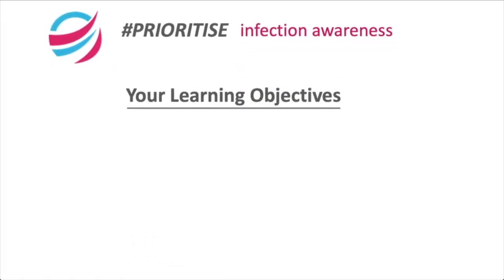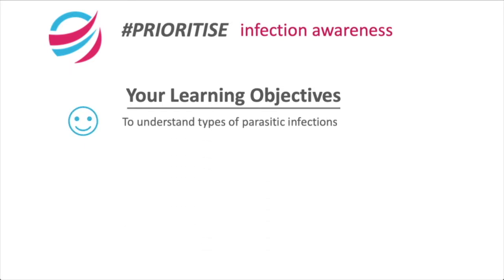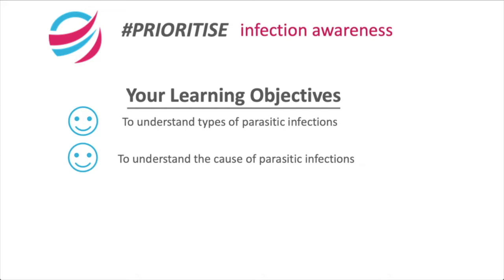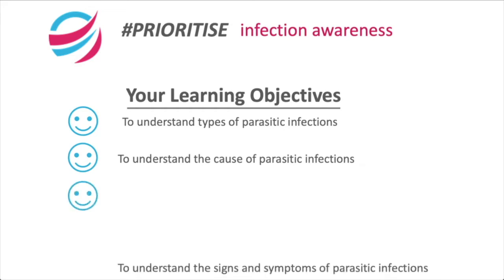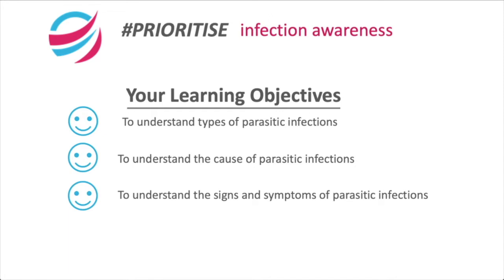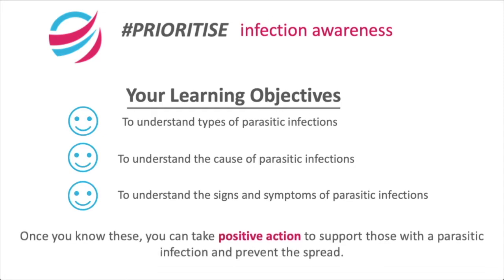Your learning objectives are: to understand types of parasitic infections, to understand the cause of parasitic infections, to understand the signs and symptoms of parasitic infections. Once you know these, you can take positive action to support those with a parasitic infection and prevent the spread.